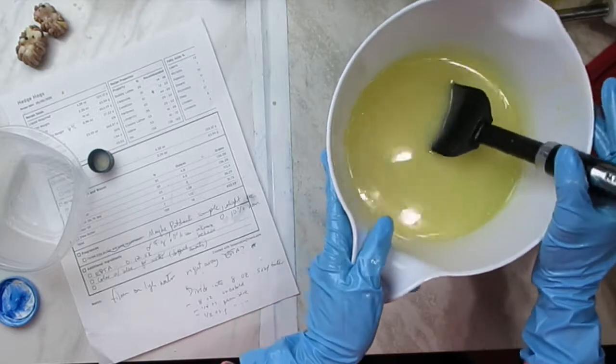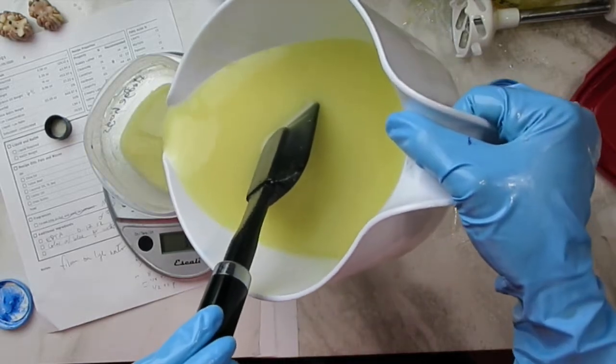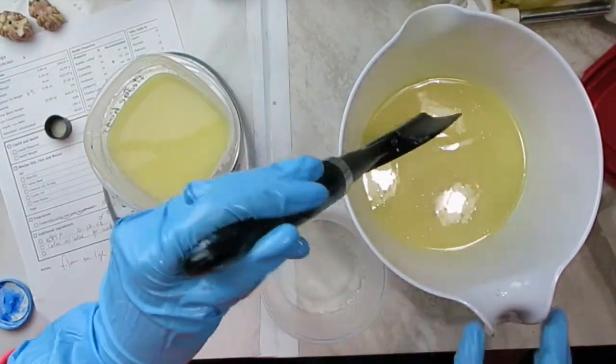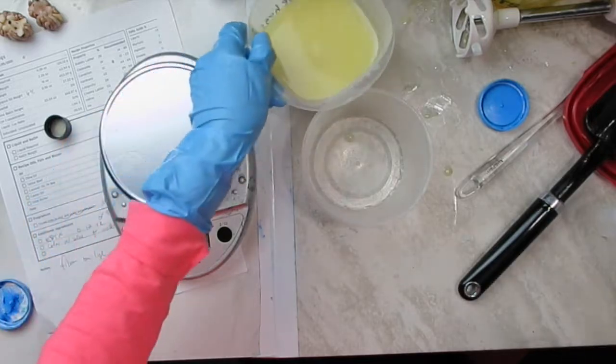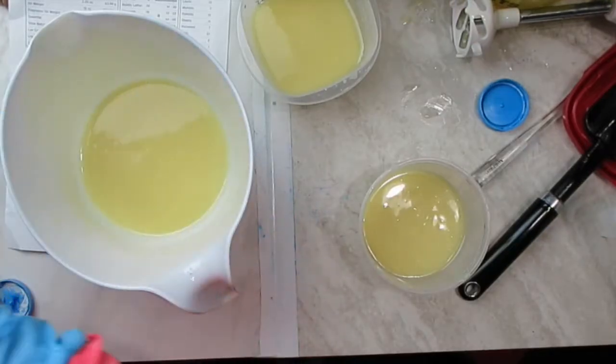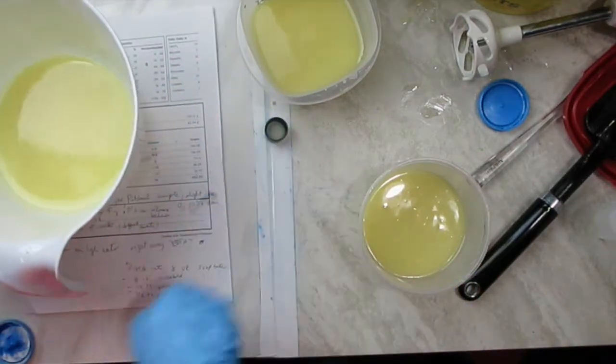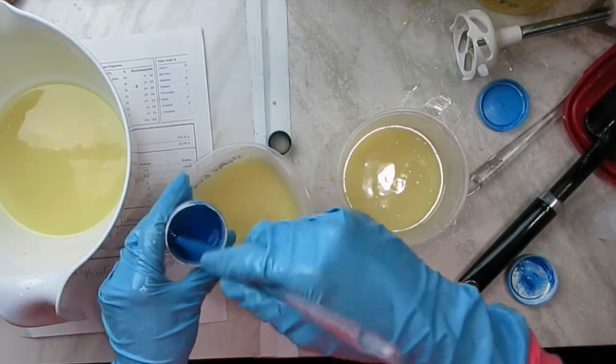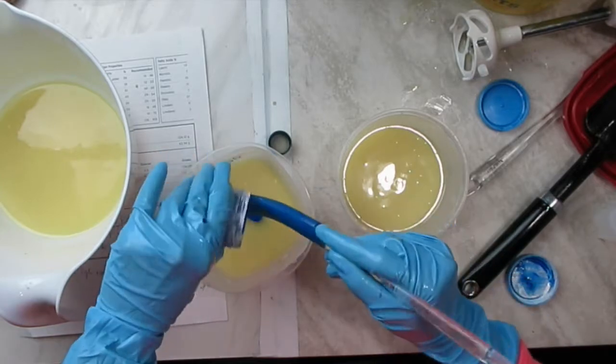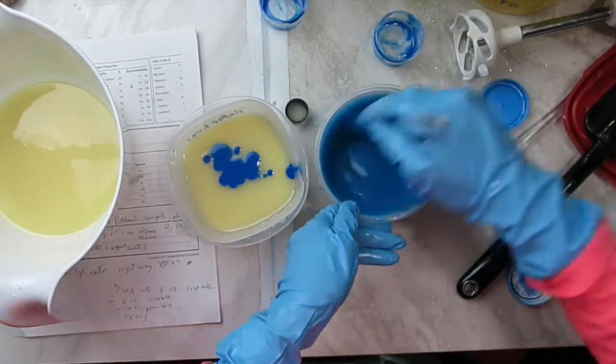I'm going to go ahead now and divide it into three portions of eight ounces each. This portion is going to be left uncolored so it should turn into like an off-white color, and then to the other two I'm going to add the pre-mixed colorant which I mixed with a light colored olive oil so that it will be easier to disperse and also to break down any lumps that tend to form in it.